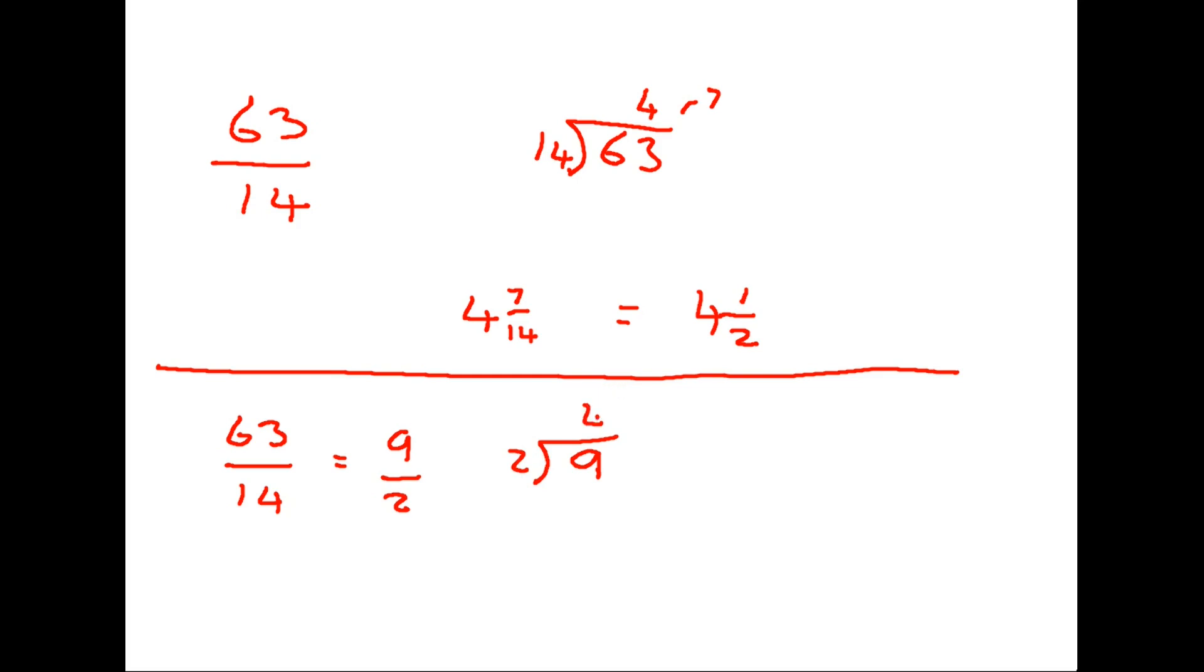How many twos in nine? Four, remainder one, which means four and a half. So you could do the sum as it stands, 63 over 14, do the conversion and then simplify. Or you could simplify first and then do the conversion. It ends up as exactly the same answer.